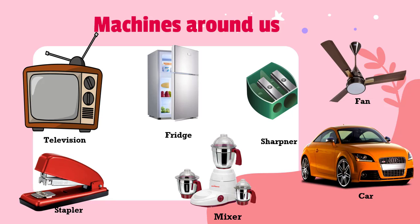Now let us see some of the machines found around us. A television set utilizes electricity. A fridge also works on electricity. A sharpener uses muscle power — we use our hand and rotate it. A fan uses electricity. A stapler uses muscle power. A mixer works on electricity. A car uses petrol, and nowadays battery-driven electric cars are also available, so they can use different forms of energy.